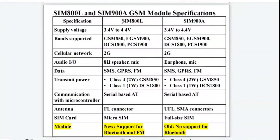Now let's see the comparison between SIM800L and SIM900A GSM modules. The supply voltage ranges from 3.4V to 4.4V. Both modules support 4 different frequency bands and the cellular network supported is 2G. There is audio input-output available in both modules. The services provided are SMS, GPRS, and FM. The transmit power is 2W for GSM850 and 1W for DCS1800. Both modules use AT commands to communicate with the controllers.